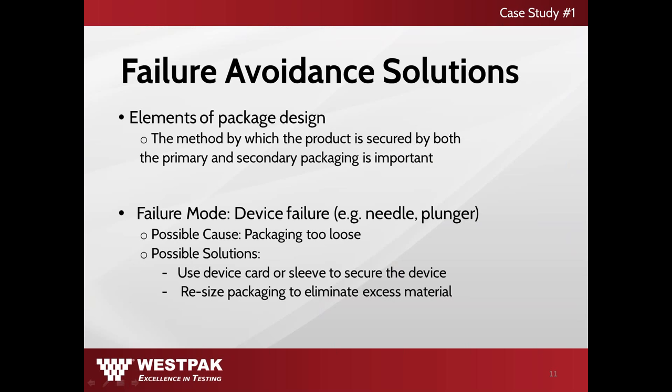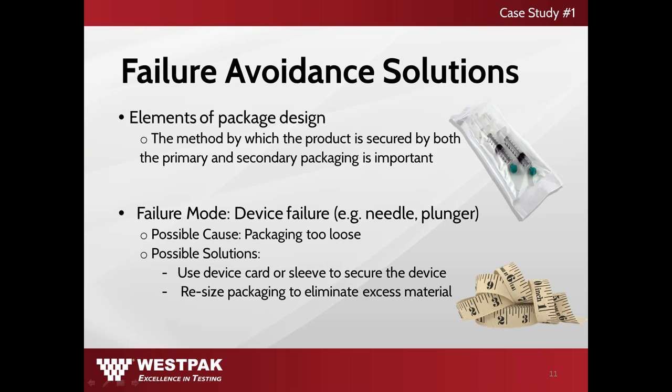Ways to avoid these types of failures could be altering elements of the package design. Looking at how the device is housed in both the primary and secondary package is important. Keeping in mind the components of the device and knowing how to protect them is crucial. The AK Ringe had several critical components including the needle as well as the plunger. Using something like a device card or sleeve could keep the device in place and prevent possible punctures or tears in the pouch. A primary pouch with excess material could also be an issue, as all the extra space in the pouch could cause the device to shift inside.